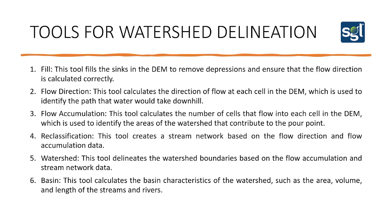The second step is flow direction. The flow direction tool, under the hydrological tools, helps us calculate the direction of flow at each cell in the digital elevation model, which is used to identify the path that water would take downhill. This helps us tell the directions of drainage paths within the terrain.